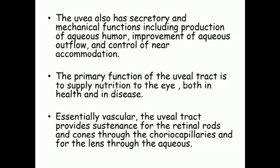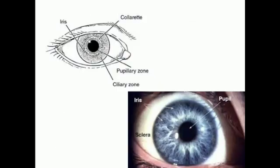The iris has two important muscles: the sphincter pupillae and the dilator pupillae. The sphincter pupillae causes constriction of the pupil and the dilator pupillae causes dilatation. This constriction and dilatation of the pupil is very important because it controls the amount of light that enters the eye. The iris is also responsible for the color of the eye.